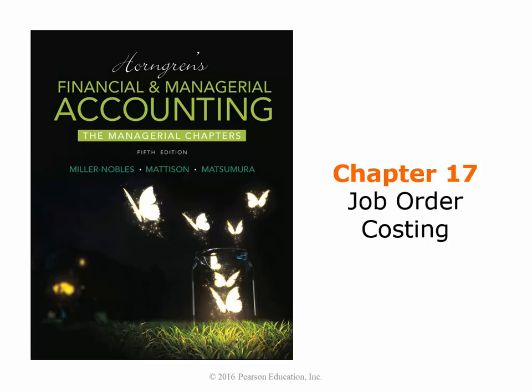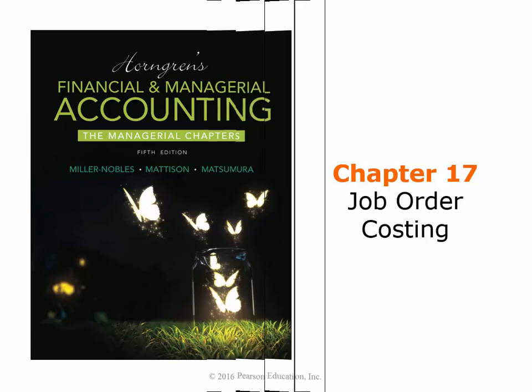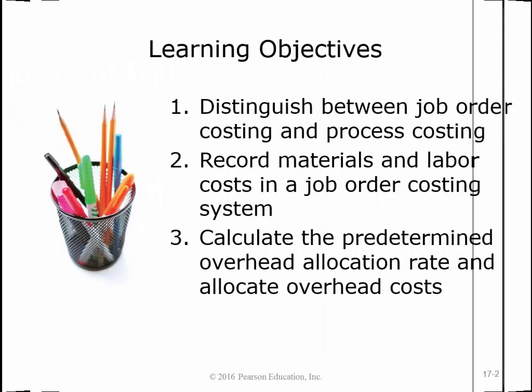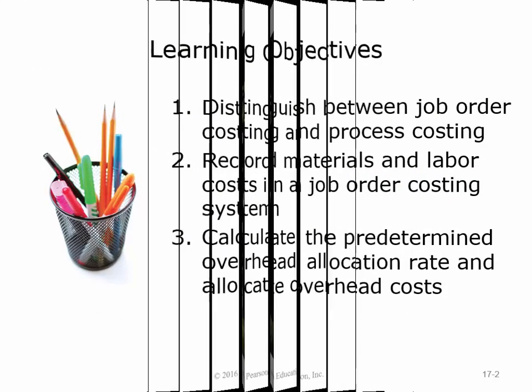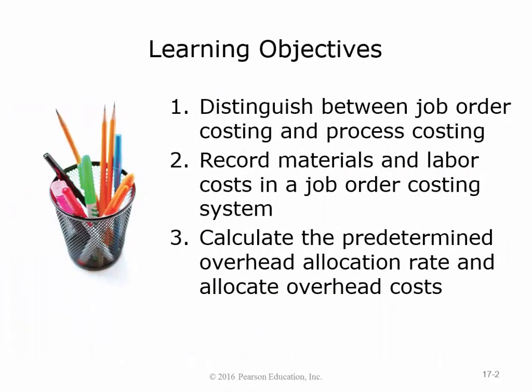Chapter 17 is called Job Order Costing. It's actually a very descriptive name, but it doesn't make sense until you start figuring out what job order costing is, and then you're like, oh, that's why they call it job order costing. They want you to see the learning objectives first before jumping into it.